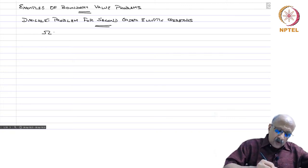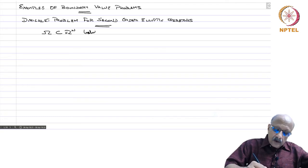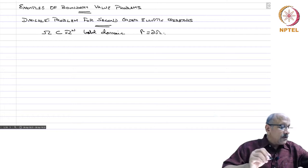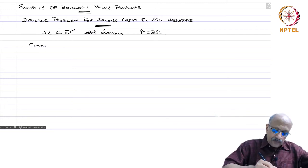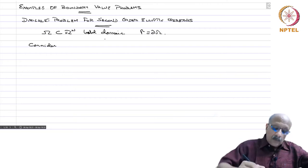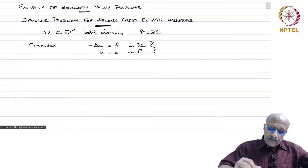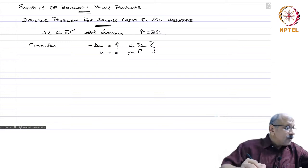Throughout, whether I say it or not, omega in R^n is a bounded domain and gamma will denote the boundary d omega. We consider the problem: minus Laplacian u equals f in omega, u equal to 0 on gamma. Delta is the Laplacian and f is some given data. In the domain it should satisfy this differential equation and on the boundary it should vanish.